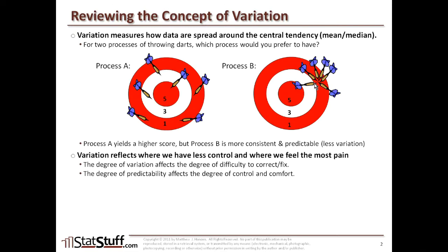The degree of variation affects the degree of difficulty in trying to correct that pain, and the degree of predictability affects our sense of control and comfort. For example, thermostat calibration: if your thermostat is consistently a few degrees off, that's easier to fix than one with high variation — sometimes too high, sometimes too low. When you have consistency in how it's performing, it's a lot easier to control.